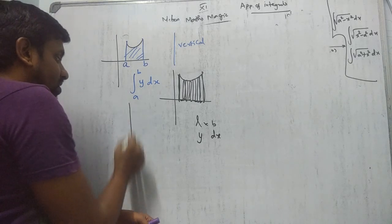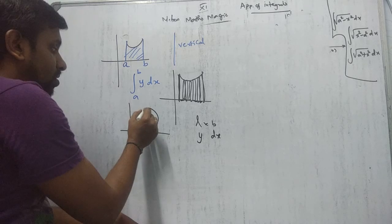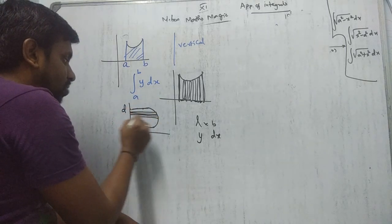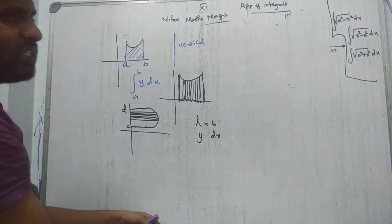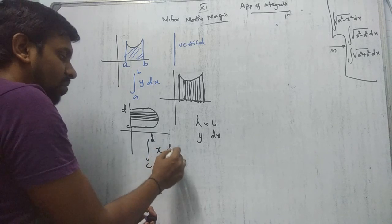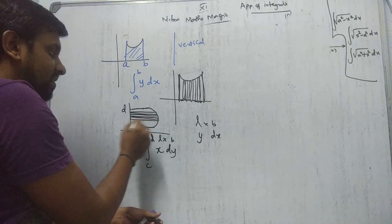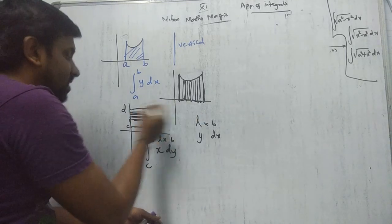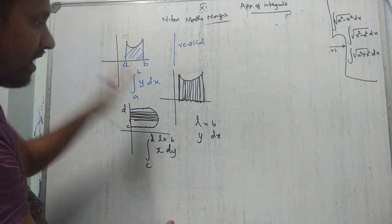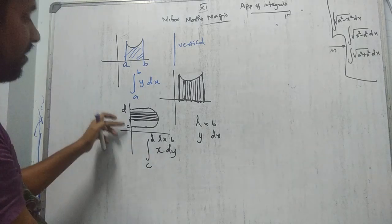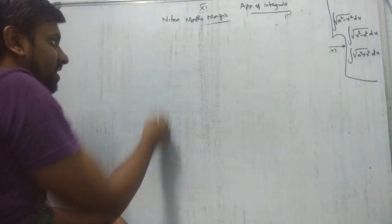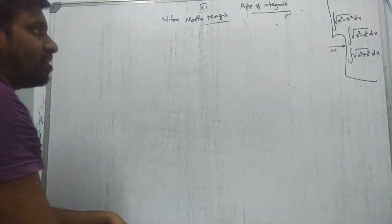The second formula uses a horizontal strip. For a horizontal strip from c to d, the formula is ∫ from c to d of x dy. The length is parallel to the x-axis, and dy is the small change in y — so area = x × dy. In summary: if you draw a vertical strip, use ∫ y dx; if you draw a horizontal strip, use ∫ x dy. I prefer the vertical strip (∫ y dx) for most problems.